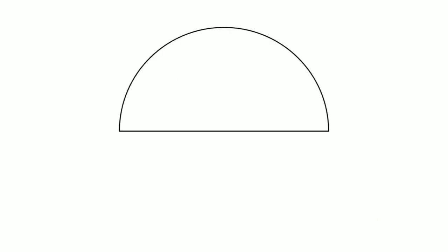Now we need to prove one more theorem: suppose that we have a semicircle and we draw a triangle from the base of the semicircle to the arc of the semicircle. Whenever the two lines of the triangle meet at the arc, this always makes an angle of 90 degrees. I didn't prove this theorem in this video because it would make it too long — this is a very basic theorem and you can prove it yourself.